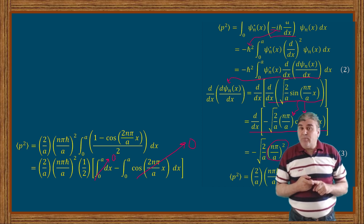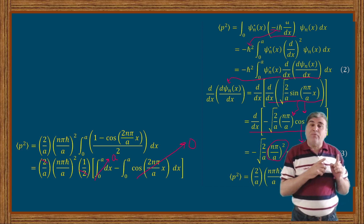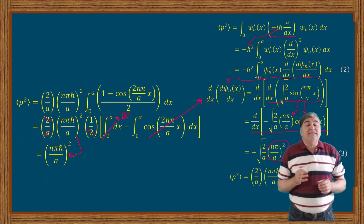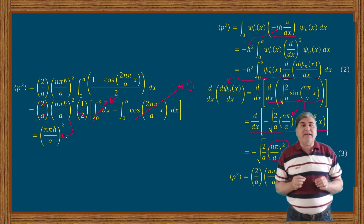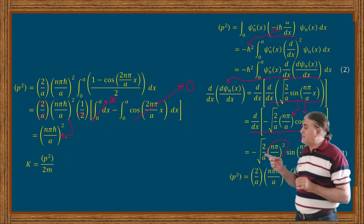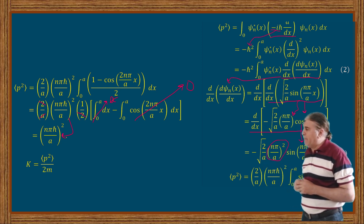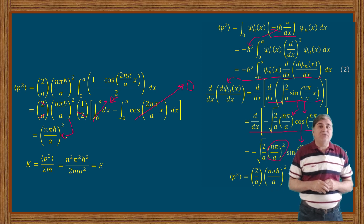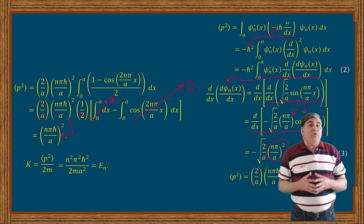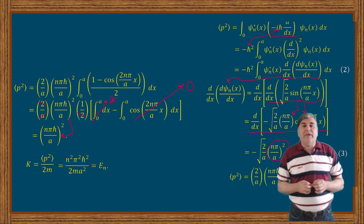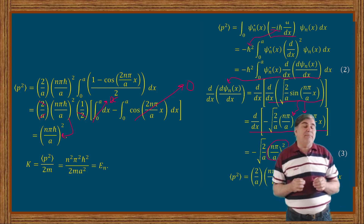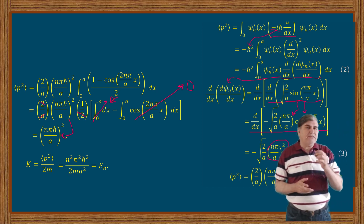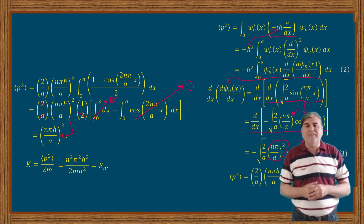The expectation value of momentum is zero, but the expectation value of the square of momentum is not zero. This result is consistent with the fact that the kinetic energy of the particle is given by K equals the average value of the square of momentum divided by 2m. Substituting the value gives n squared pi squared h-bar squared divided by 2m a squared, which equals the total energy calculated in our previous videos and is also in agreement with the zero-point energy of the particle. If you haven't subscribed to Safi Mags, please support the channel through your valued subscription. Thanks for watching.